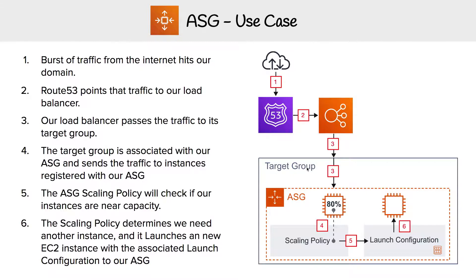We have so much traffic that it causes our CPU utilization to go over 75%. And once it goes over 75%, because we had a target scaling policy attached that said anything above 75% spin up a new EC2 instance, that's what the auto scaling group does. The way it does it is it uses a launch configuration, which is attached to the auto scaling group, and it launches a new EC2 instance.